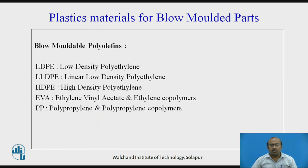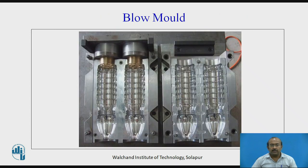Plastic materials for blow molded parts. These are some of the plastic polymer materials which can be processed in blow molding: LDPE, LLDPE, HDPE, EVA, PP. The blow mold in real life looks like this — this is one blow mold example.